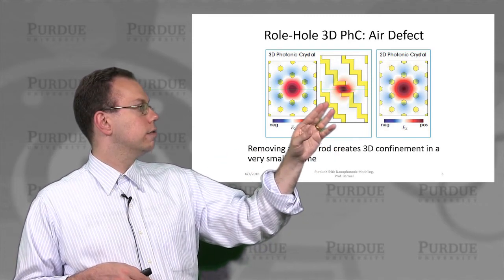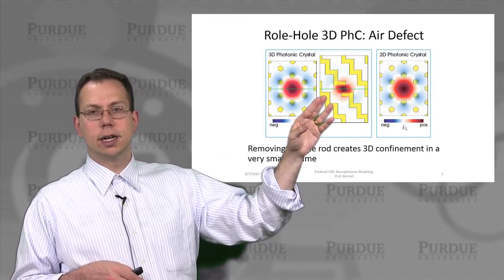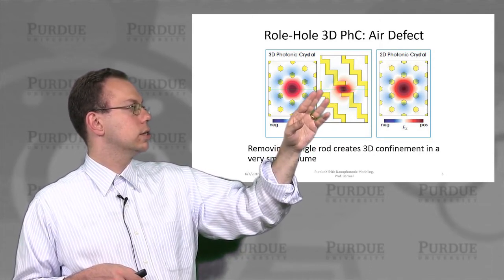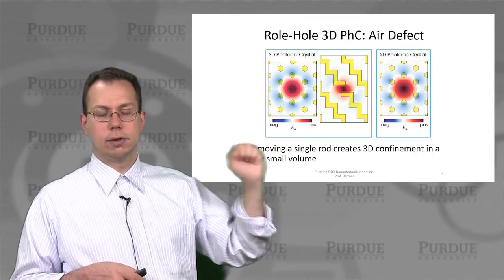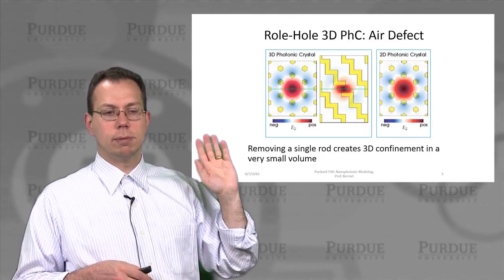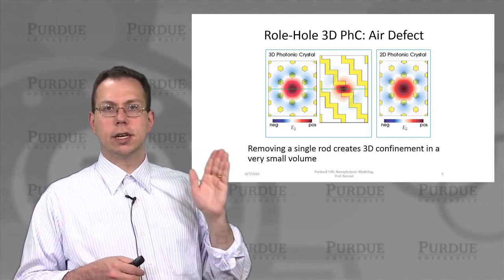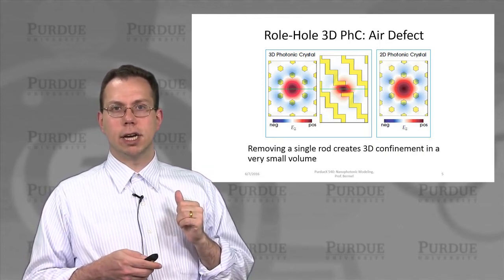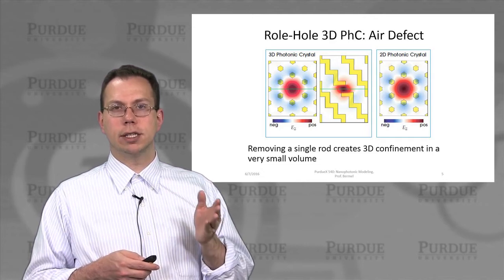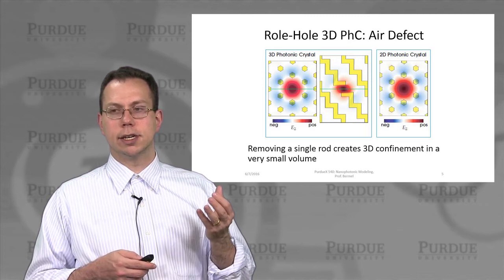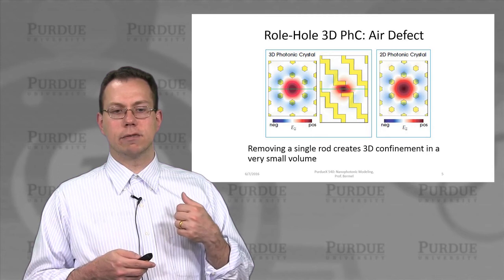In fact, you don't have to worry about index guiding here as you might in the slab. Instead, you actually get a very strong exponential decay in the Z direction, which is not at all obvious, but you do get that. This is very nice behavior — it tells us we can get very good 3D confinement of a mode and have a very small volume at the same time. For many applications such as making high-efficiency, low-loss lasers and sensitive detectors, this is a very valuable thing.